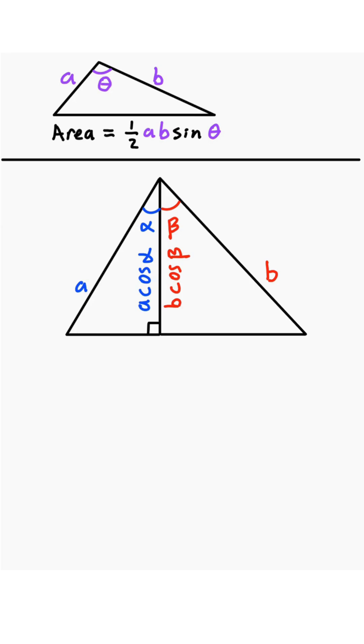Since these two triangles have the exact same height, then A cosine of alpha must be equal to B cosine of beta.